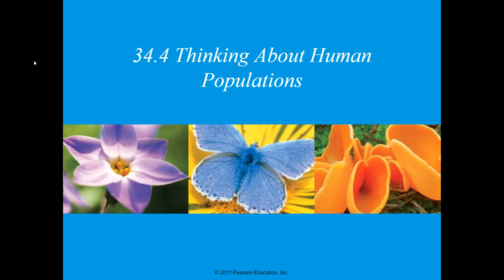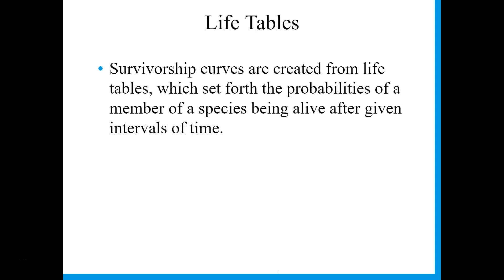In this last section of chapter 34, we're going to start talking and thinking about human populations. We're going to start with life tables and survivorship curves. Survivorship curves are created from life tables, which talk about the probability of being alive after a given interval of time.